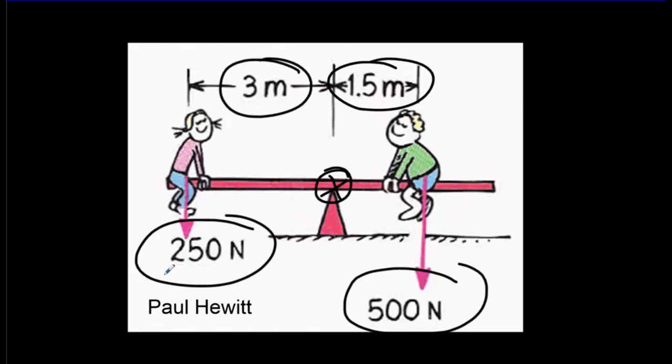So these rotational forces, these torques, they're not just going to depend on the force. They're also going to depend on these distances here. And this distance from the rotational axis to where the force is applied, that's usually called the lever arm.